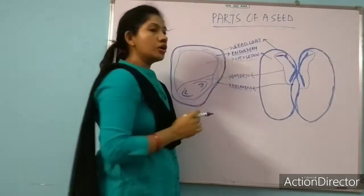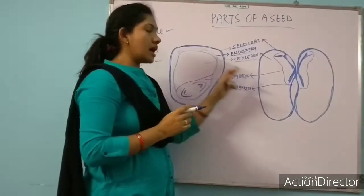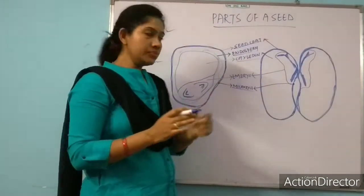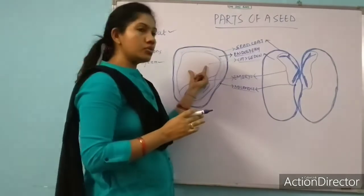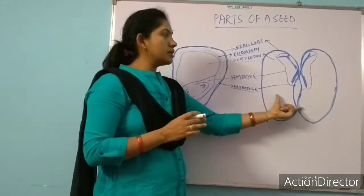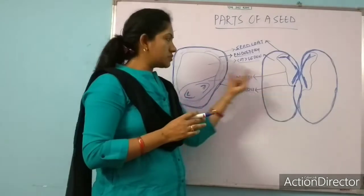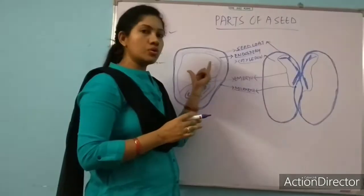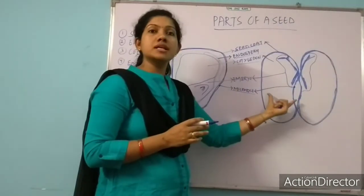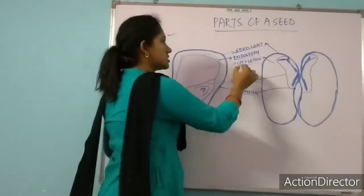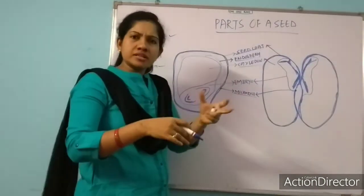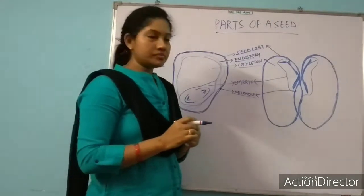After endosperm we can get cotyledons — cotyledons are the first leaf of a seed. In monocot we get a single cotyledon, whereas in dicot we get two cotyledons. That is why we call them monocotyledon seed and dicotyledon seed. After cotyledon, the next part is embryo.